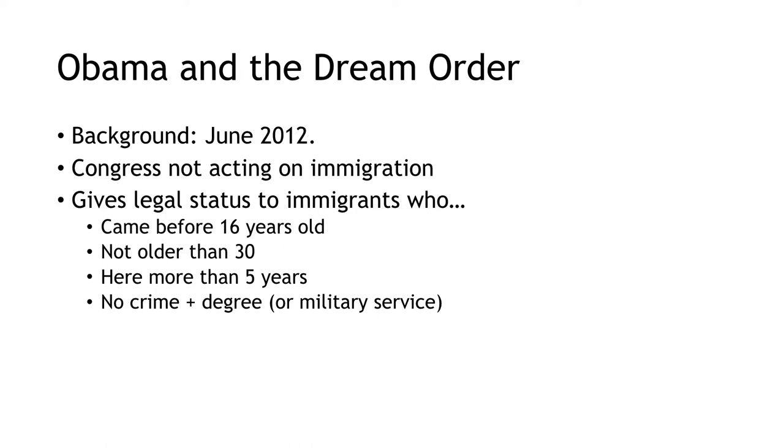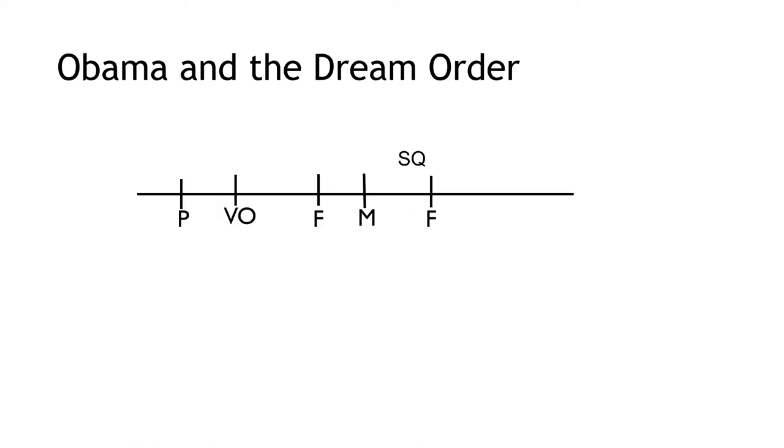Let's go through some concrete examples. In 2012, Congress had not acted on immigration. At this time, Obama passes the Dream Order, which gives certain legal status to a subset of immigrants. Here's how we might draw the Dream Order within the Pivotal Politics Framework. Obama moves the policy not as far as he would have liked, but further to the left and still within the gridlock interval.